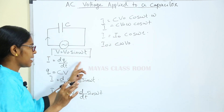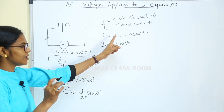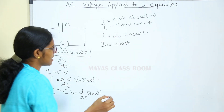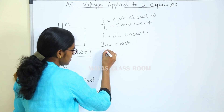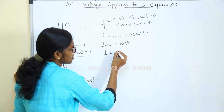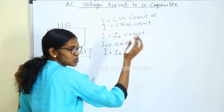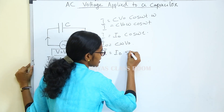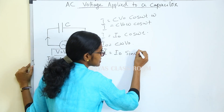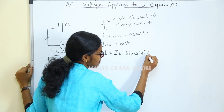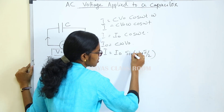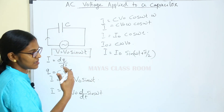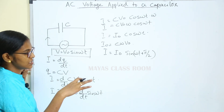We will compare the cosine term to the sine term. The equation becomes I equal to I0 cos(ωt). What is cos(ωt)? It is sin(ωt + π/2). Cos θ equals sin(θ + 90°) or sin(θ + π/2).